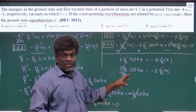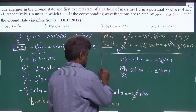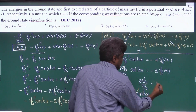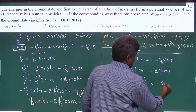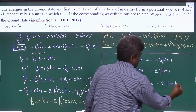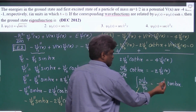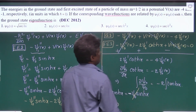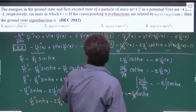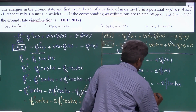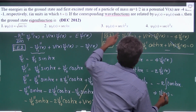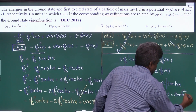This is a first-order differential equation. Making it variable separable: dψ₀/ψ₀ equals minus 2·tanh(x) dx. Integrating both sides, the final answer is ψ₀ of x equals sech²(x).